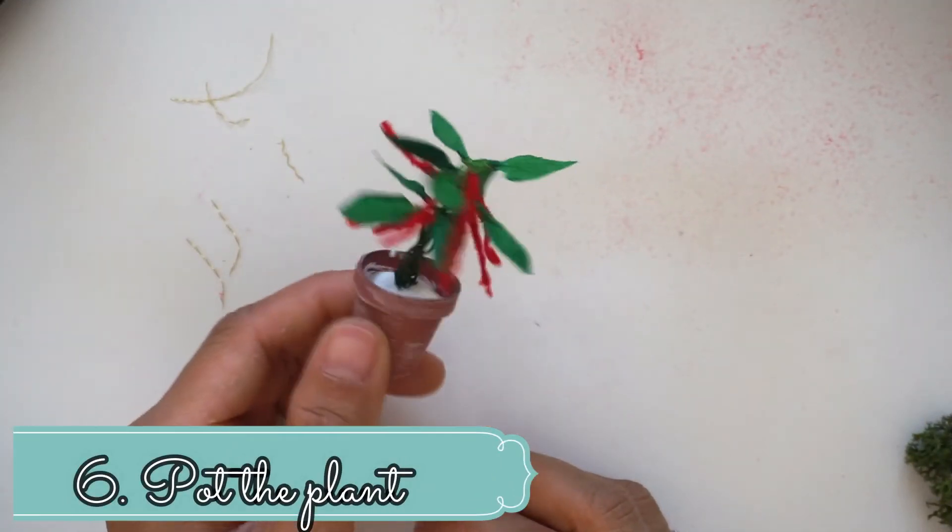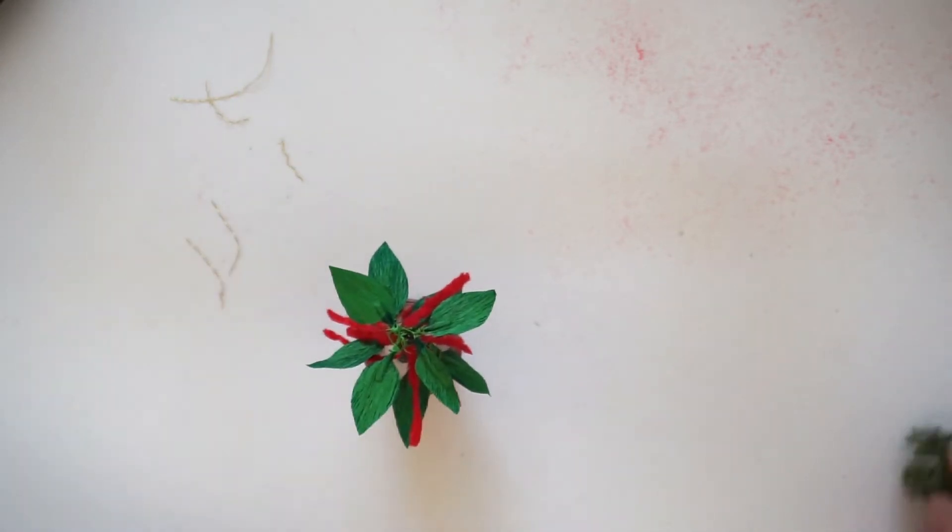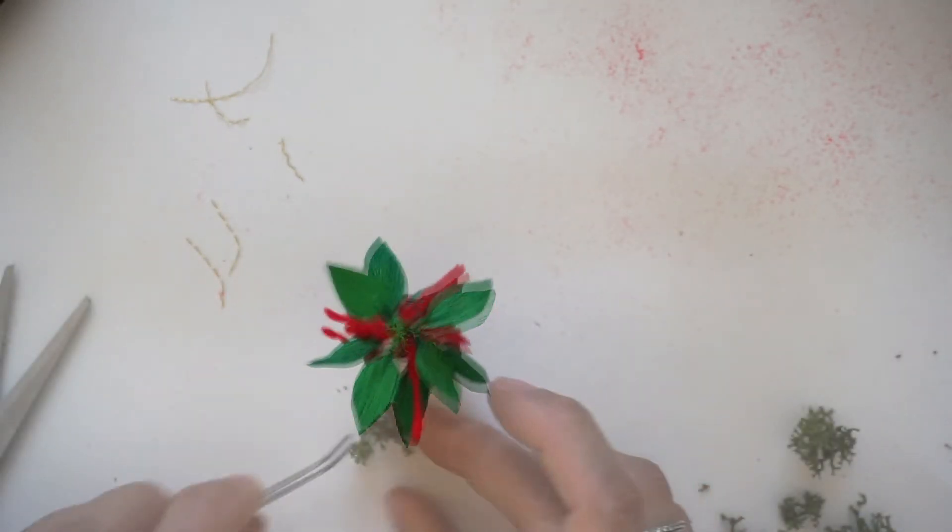And lastly, you can put your plant into a pot and then just cover it with some dry moss or maybe some soil.